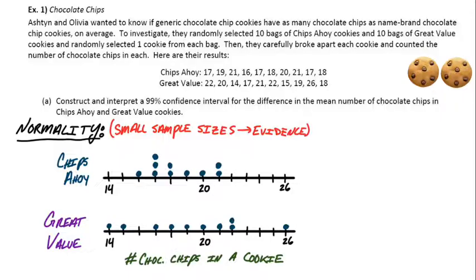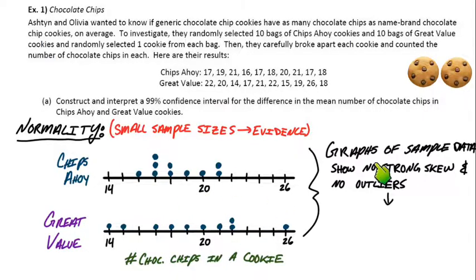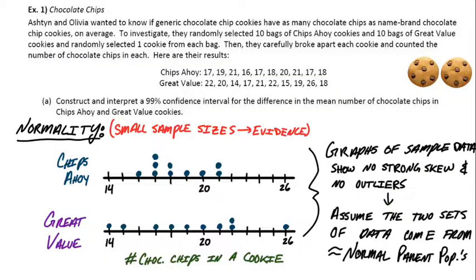So 10 is a really small sample size. And looking at both of these, it doesn't look like normal, but it's not particularly skewed, right? There's no really strong skew in one direction or the other. It's not, like I said, it's not perfectly symmetric by any means, but there's no crazy skew and there's no outliers. So as long as the graphs of our sample data, this is the comment that we have to make. Okay, look at the sample data. We don't see any strong skew. We don't see any outliers. That means we can assume that the two sets of data would come from approximately normal parent populations. So at this point, our conditions are all good.